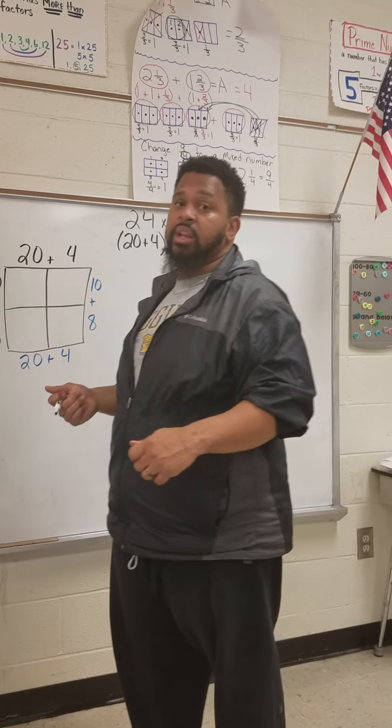Now, every box where the numbers connect, we're going to multiply those numbers. In this box, 10 and 20 connect, so we multiply 10 times 20 and get 200. In this box, we multiply 4 times 10 and get 40. This box, 8 times 4 gives us 32. And in the last box, these two numbers connect and we multiply 8 times 20 to get 160.